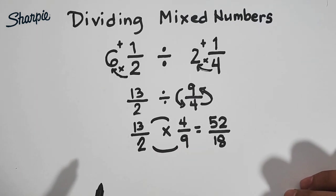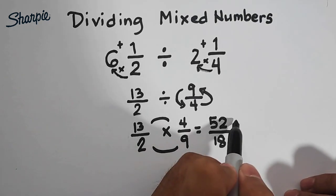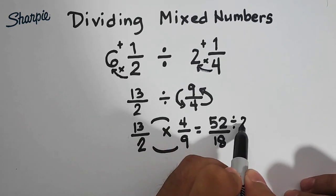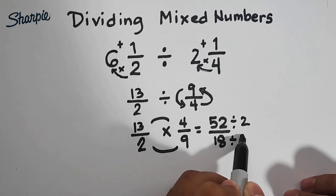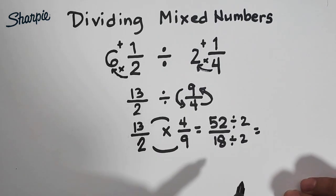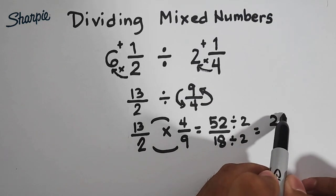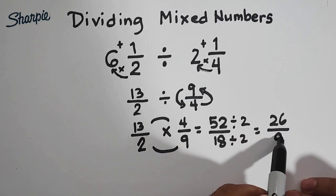And we know that we can still simplify 52 over 18 by dividing both sides, by dividing your numerator and your denominator by 2. So it will give us the answer of 26 over 9.